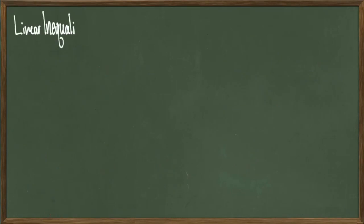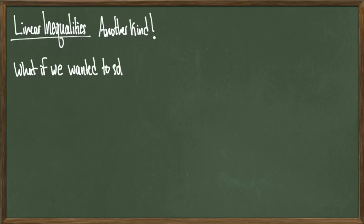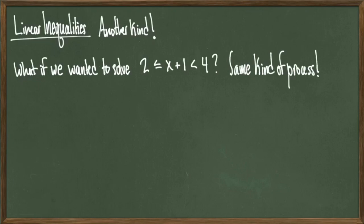To finish up, let's talk about another kind of linear inequality. This one will have a different kind of solution set than we've been seeing so far. What if we wanted to solve something that looked like 2 less than or equal to x plus 1 less than or equal to 4? Even though it looks like there's a lot more going on here, it's really not too bad. We're going to be using the same kind of process, just with a little bit more bookkeeping, and being a little bit more careful with how our solution set looks.